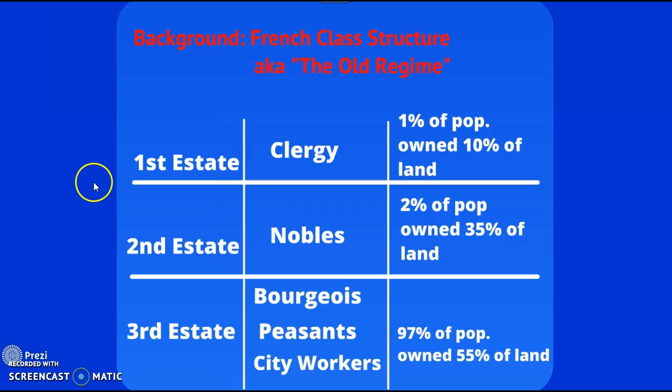So the First Estate — let's talk about them. To be in the First Estate, you had to be a member of the Clergy. Clergy are people who work for the Church, so that would be bishops, priests, and it also would include the Pope. That's a very small percentage of the population — 1% — and they are going to actually own 10% of the land.